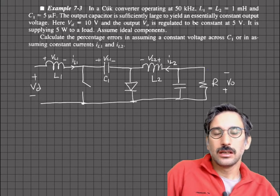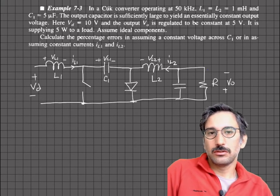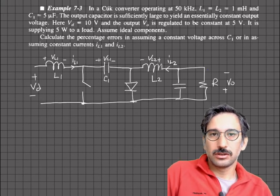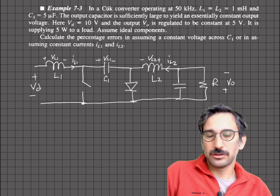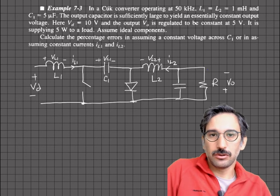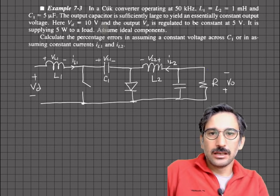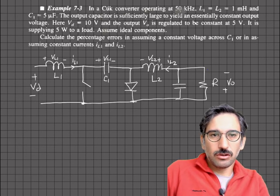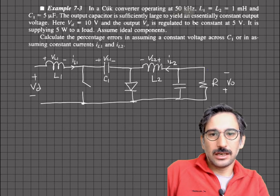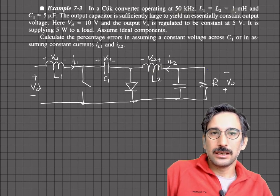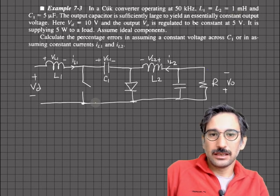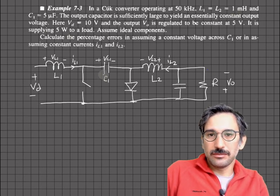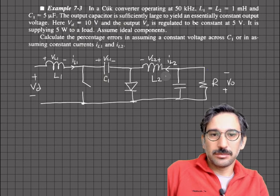Today I would like to solve an example of a Cuk converter from your textbook — example 7.3 from Mohan's book. The converter operates at 50 kilohertz, L1 and L2 are equal at one millihenry, and C1 is five microfarad.